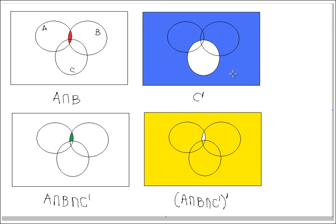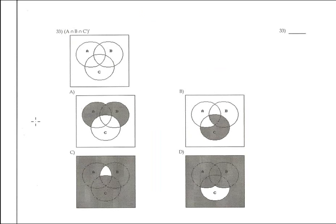The intersection between the red part and the blue part gives the common region — just this small area. The green part is A∩B∩C'. Finally, taking the complement of that gives everything except the green part — the yellow part. This is the answer, corresponding with option C.